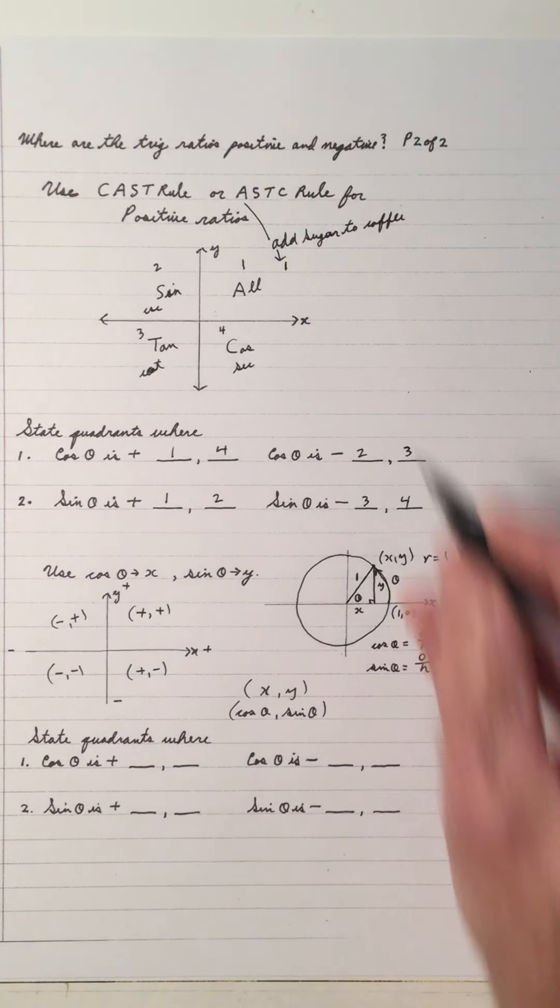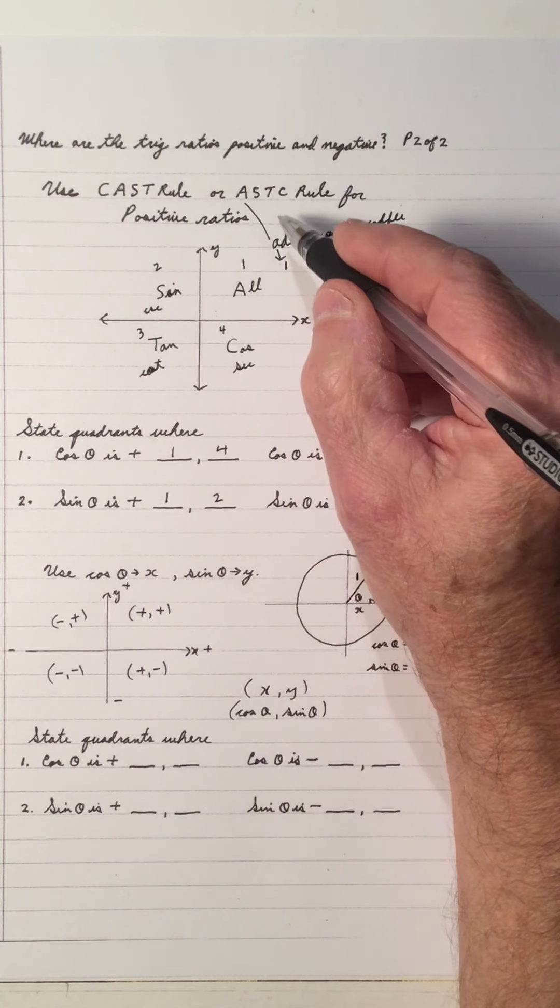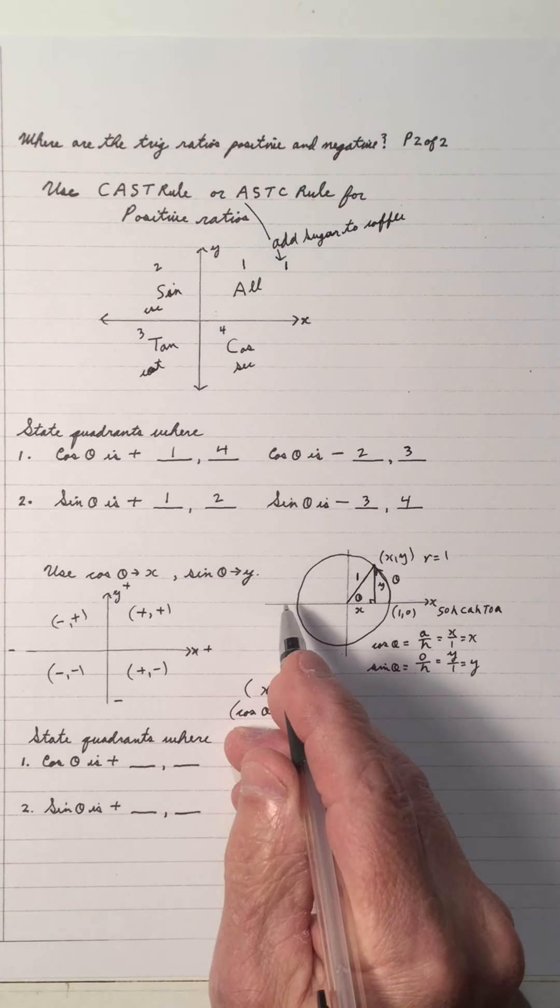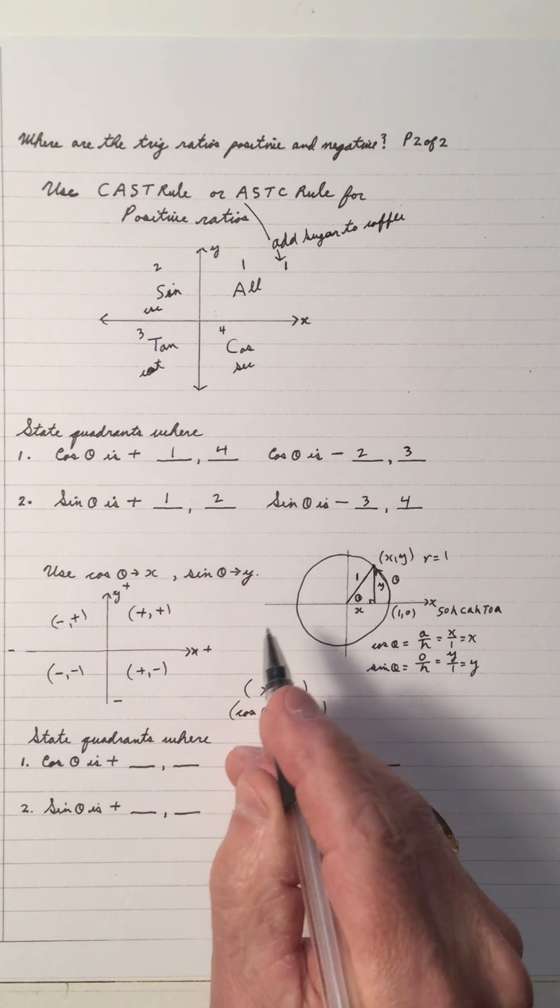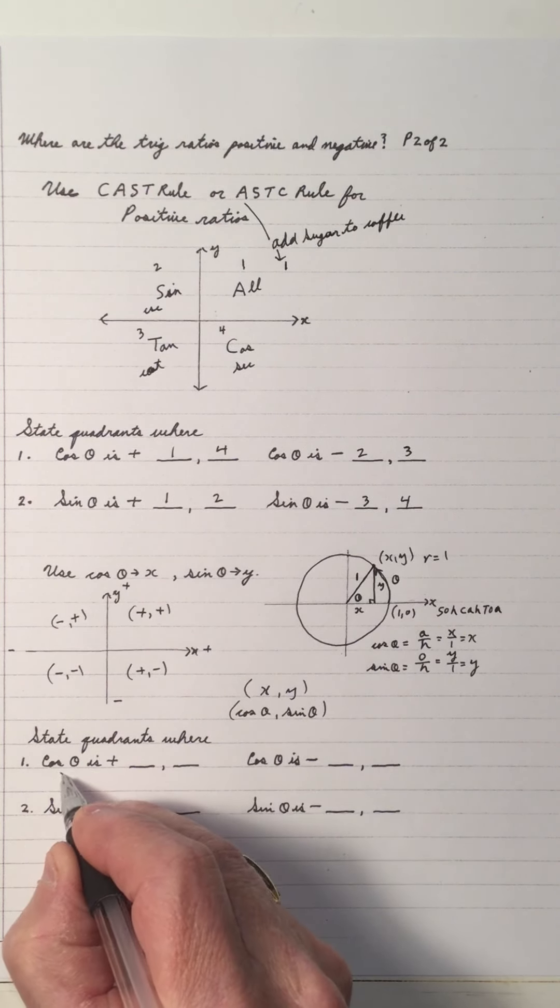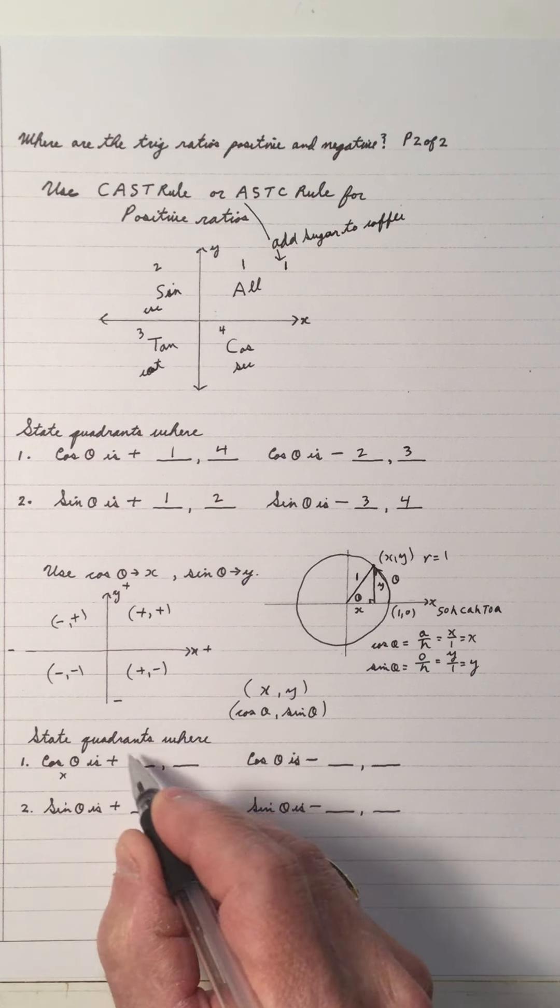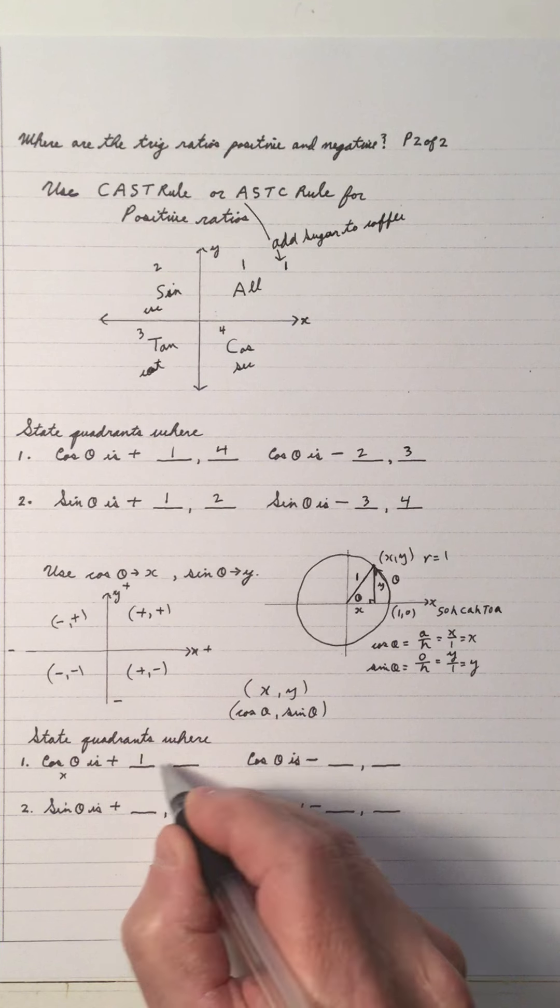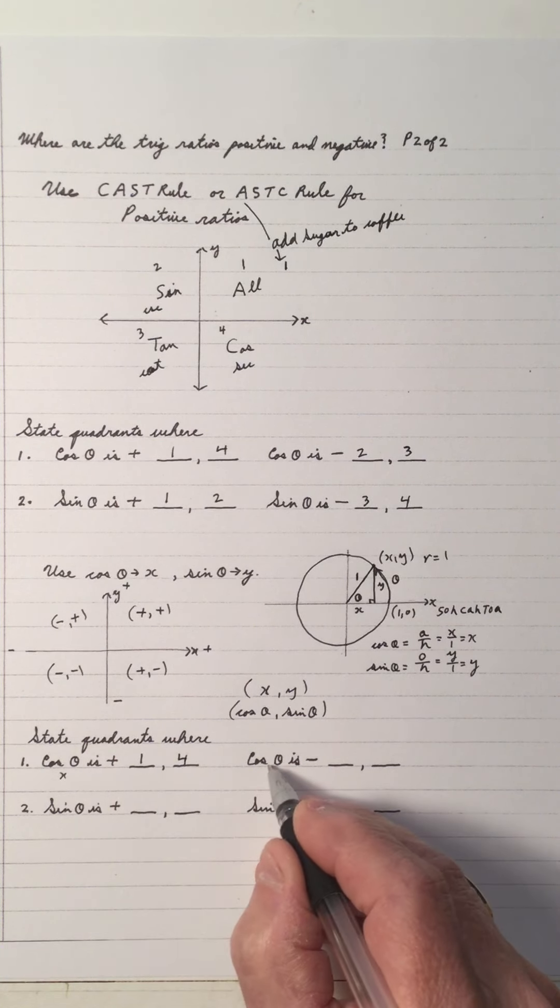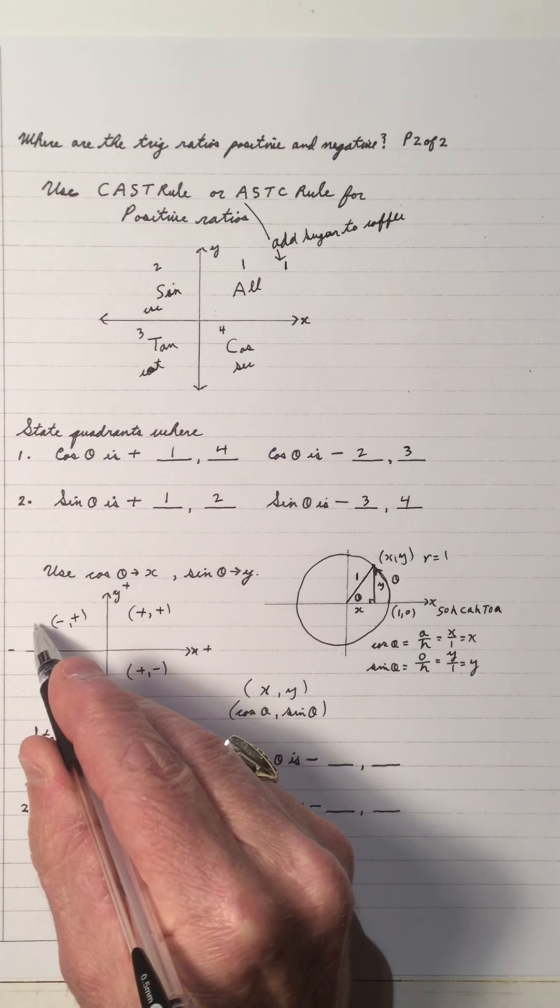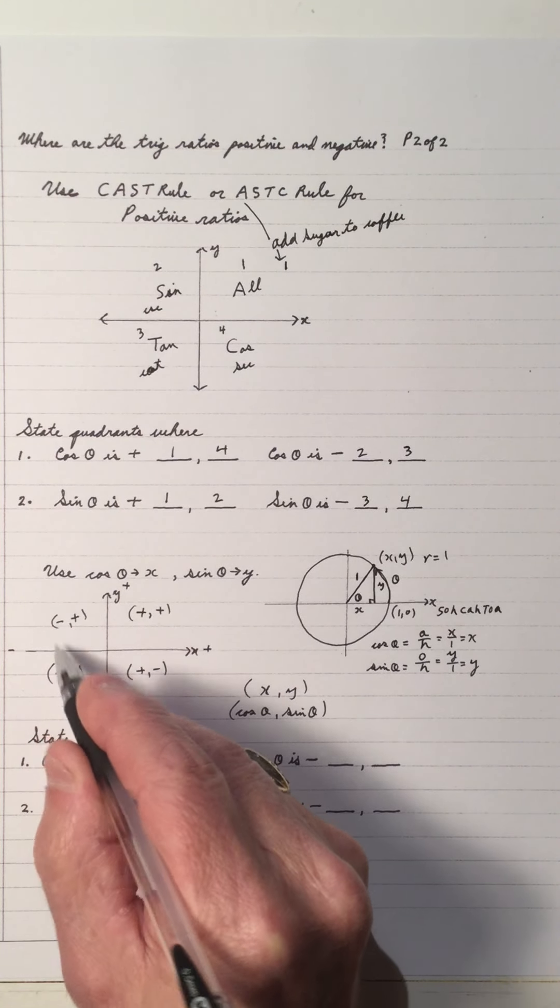So you can look at it from the CAST rule, or ASTC, or think about cos as the x associated with the x and the y on a unit circle. So cos is positive, that means where x is positive. So x is positive in 1 and 4. Cos is negative, that's where x is negative, and x is negative on the left side of 2 and 3.